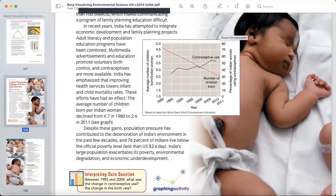Despite these gains, population pressure has contributed to the deterioration of India's environment in the past few decades. And 76% of Indians live below the official poverty line, that is less than US $2 a day. India's large population exacerbates its poverty, environmental degradation, and economic underdevelopment.